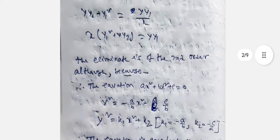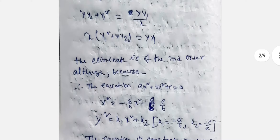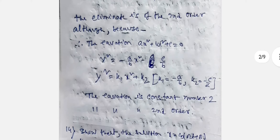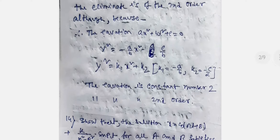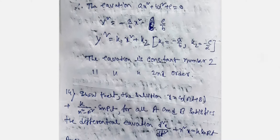By cross multiplication: X(Y1² + Y·Y2) = Y1. The eliminate is of second order although the equation AX² + BY² + C = 0 involves three constants, because dividing by B reduces to two effective constants K1 = -A/B and K2 = -C/B. Thus only two differentiations are needed, giving a second order equation.